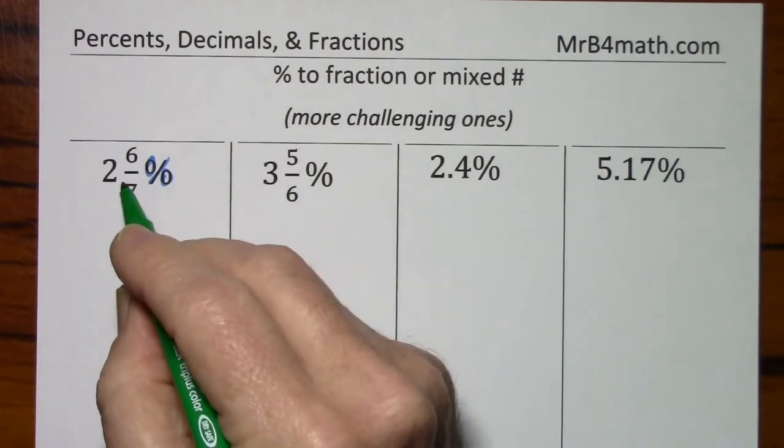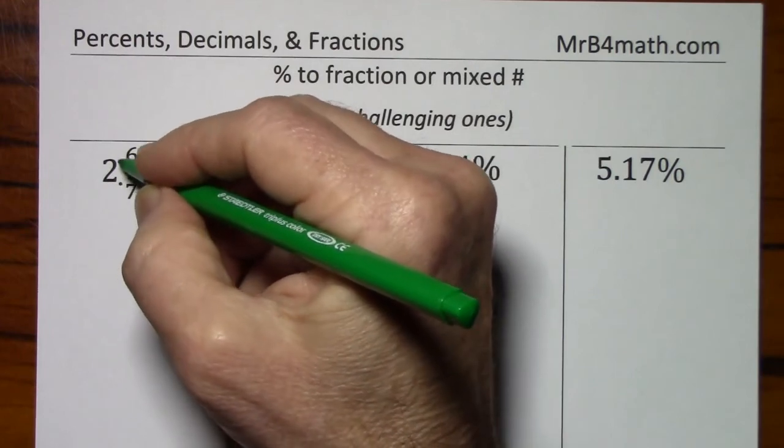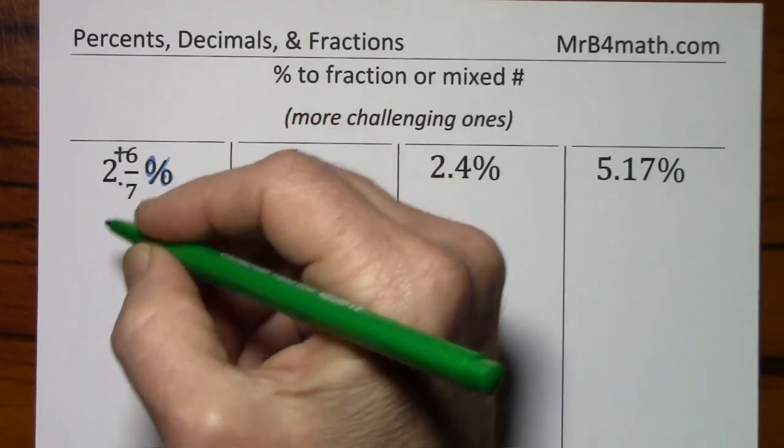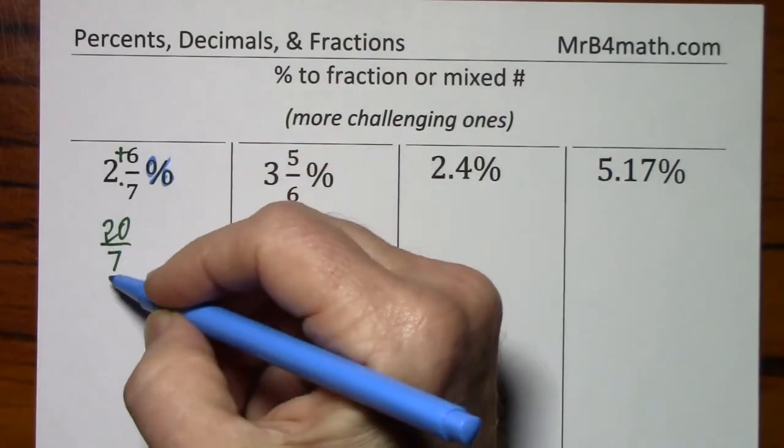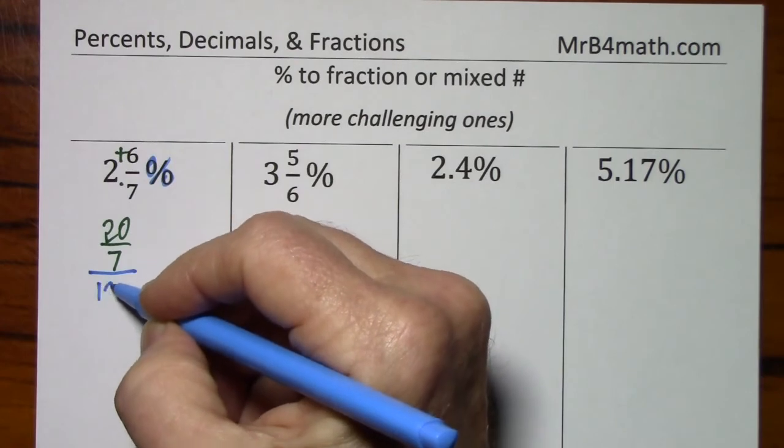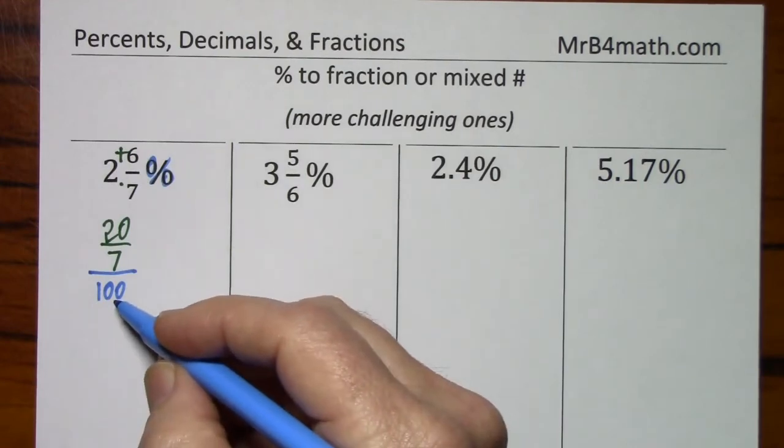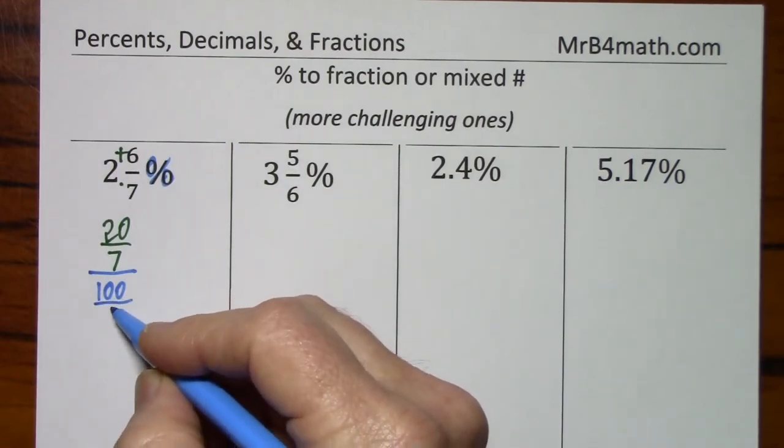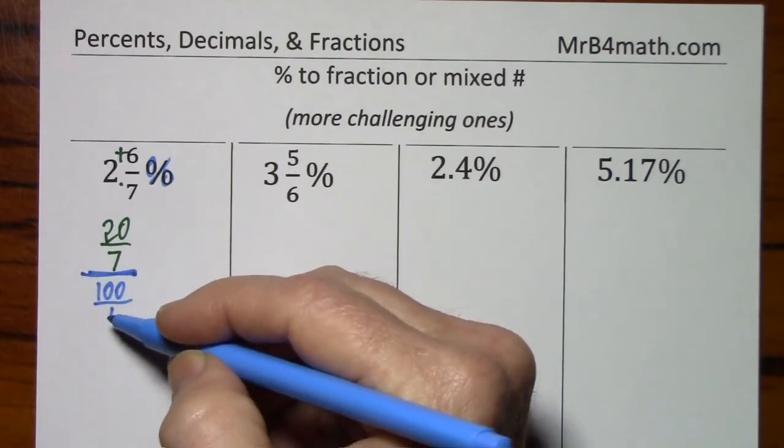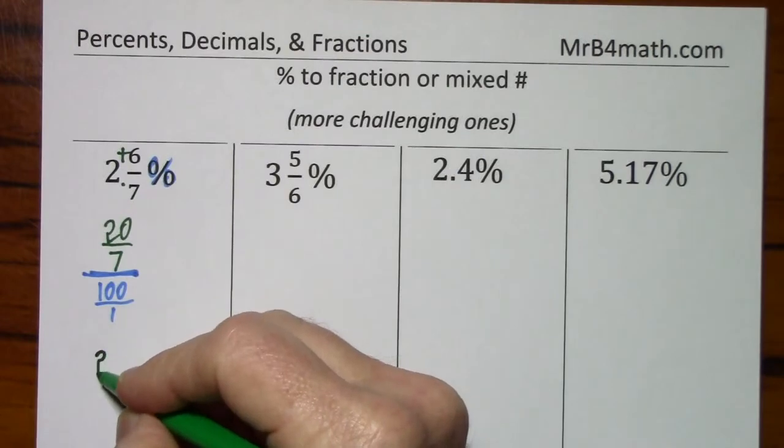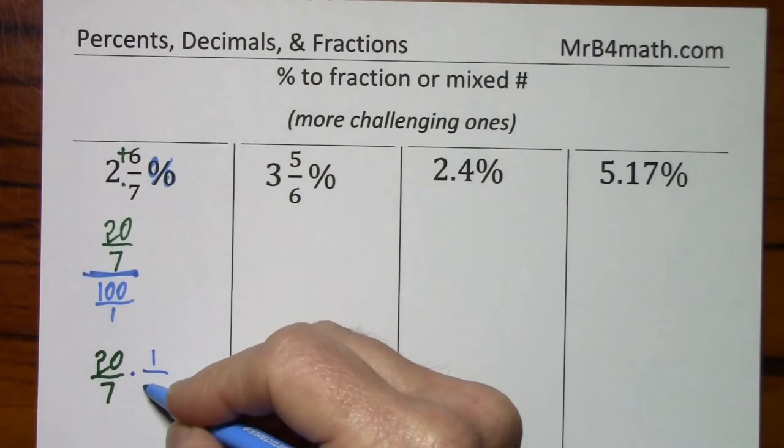2 and 6 sevenths, I'm going to need this to be improper. You can't multiply or divide by a mixed number. So that'll be 14, that's 20 over 7. And I've been emphasizing that percent means per 100, but this is going to be a confusing way to write it. 100 is really 100 over 1. 20 over 7 divided by 100 over 1 is 20 over 7 times 1 one hundredth.